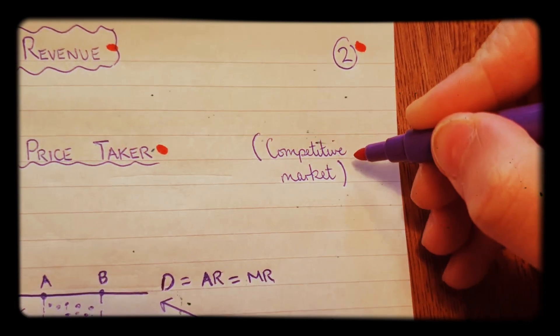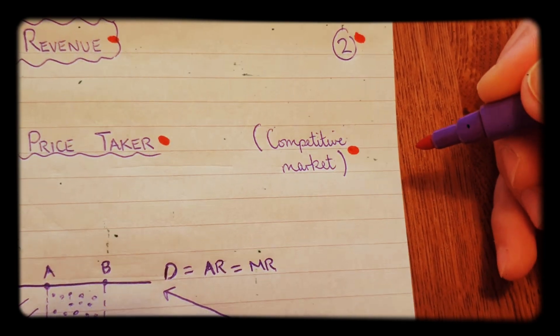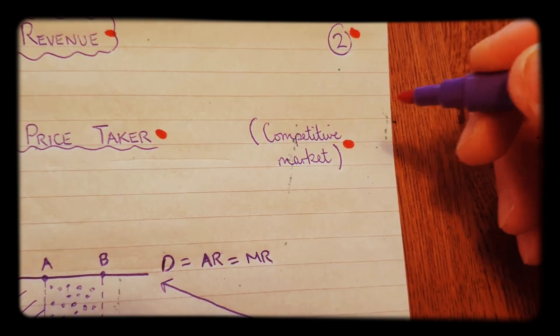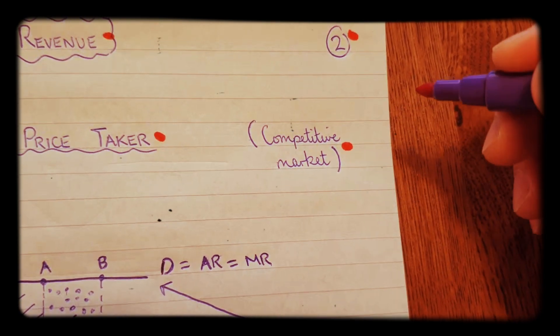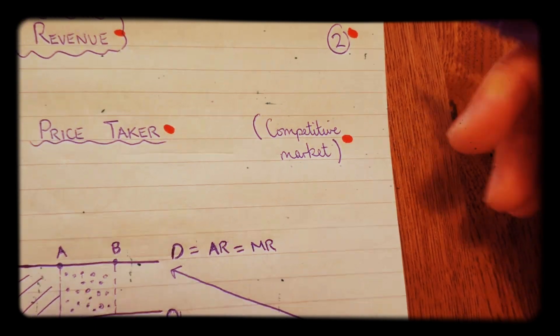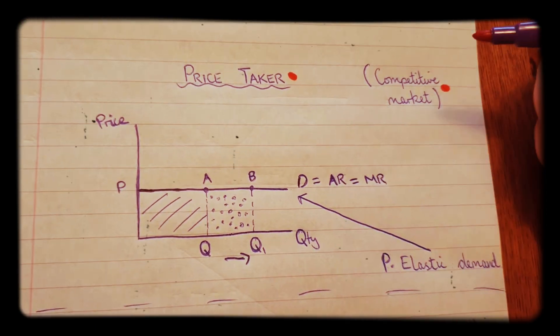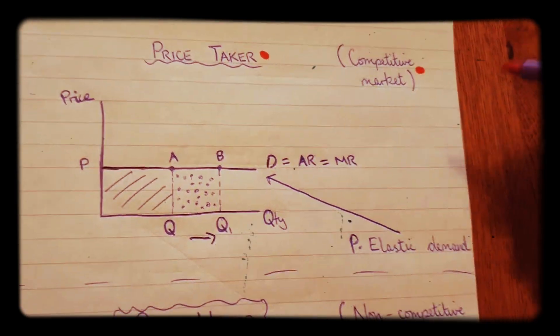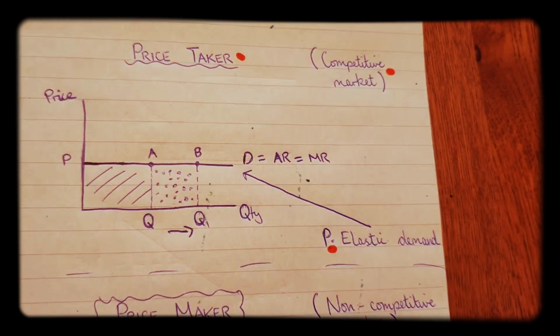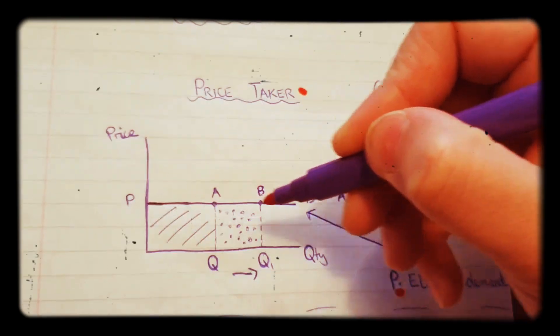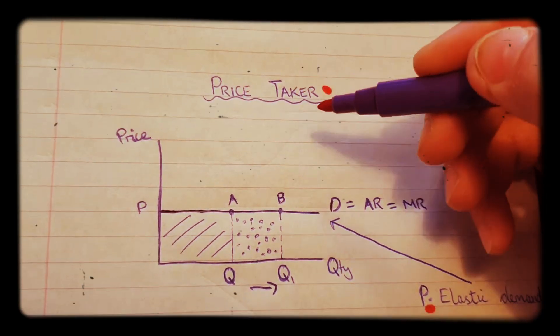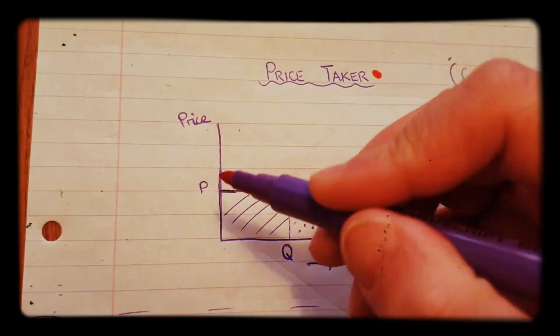This is what you would draw in the case of a competitive market. If you're drawing a demand curve or revenue curve in the case of competitive markets, perfect competition for example, you'll be drawing this curve here. As you can see, it's a perfectly elastic demand curve, completely horizontal. Why is that? Because the firm is a price taker.